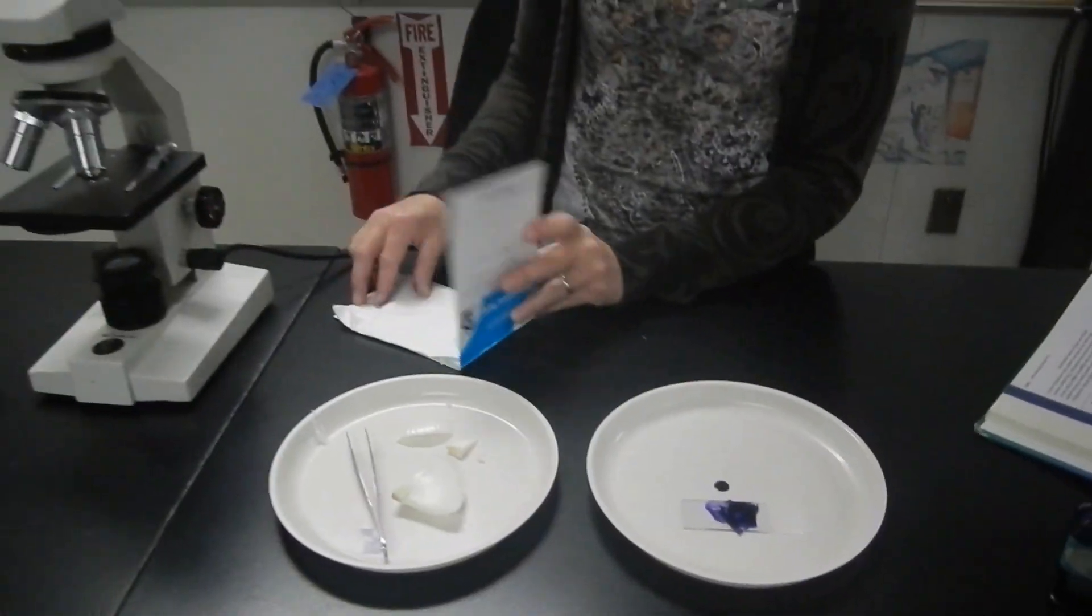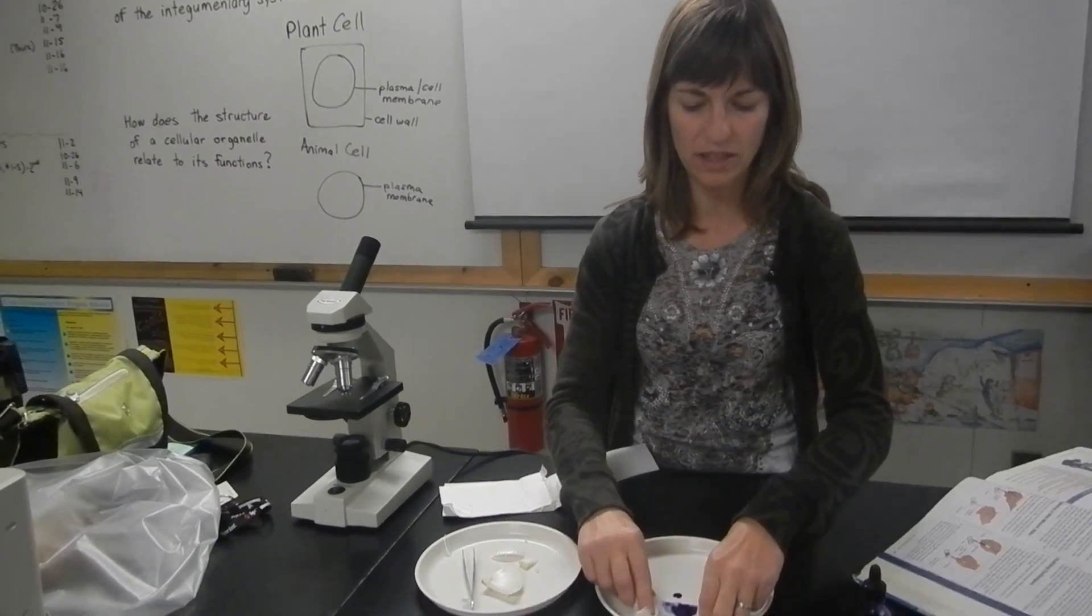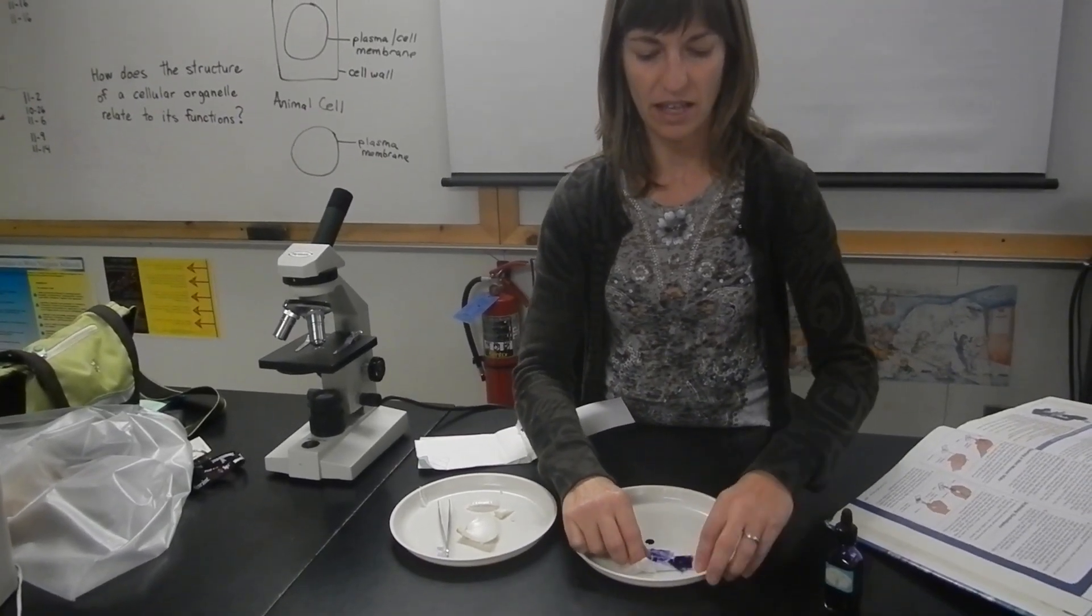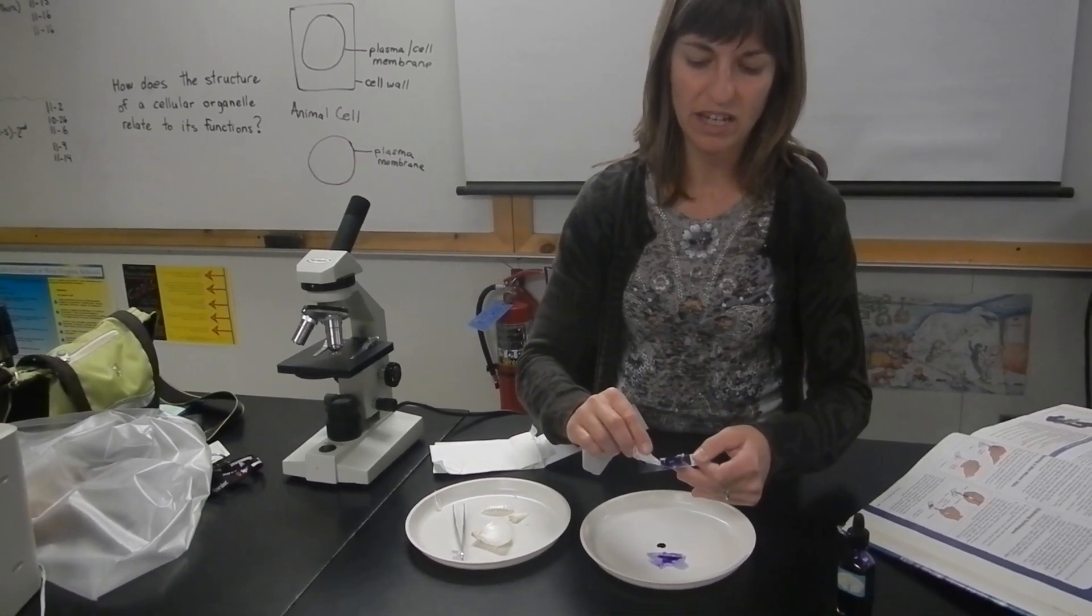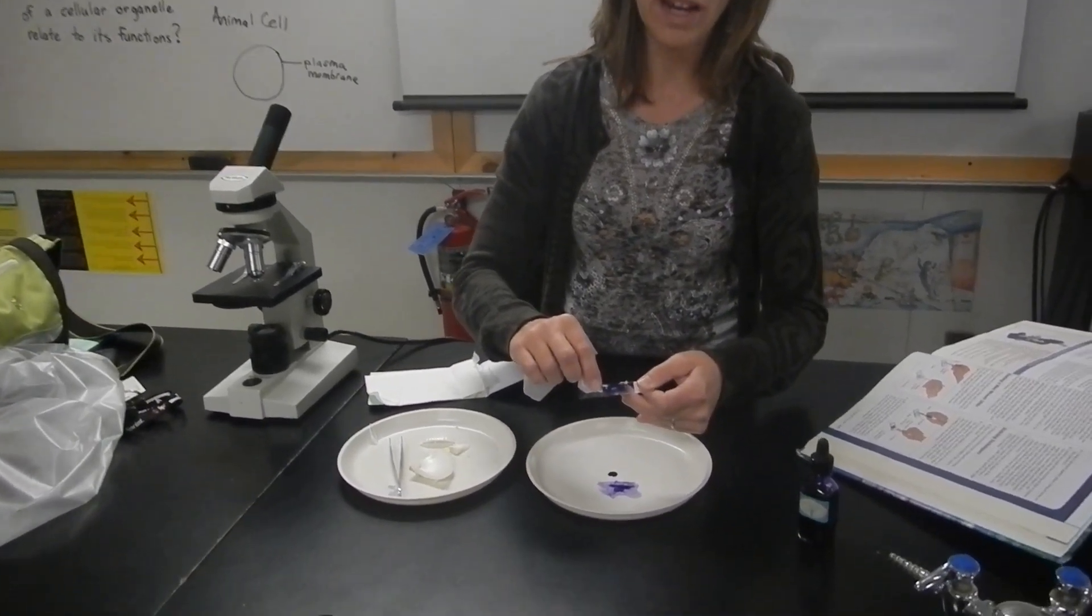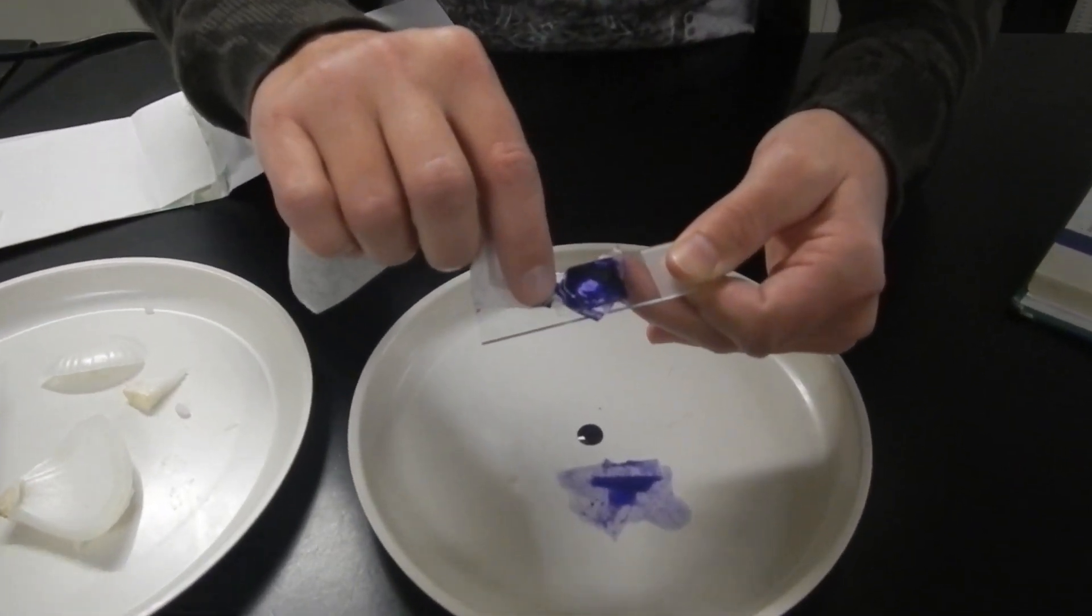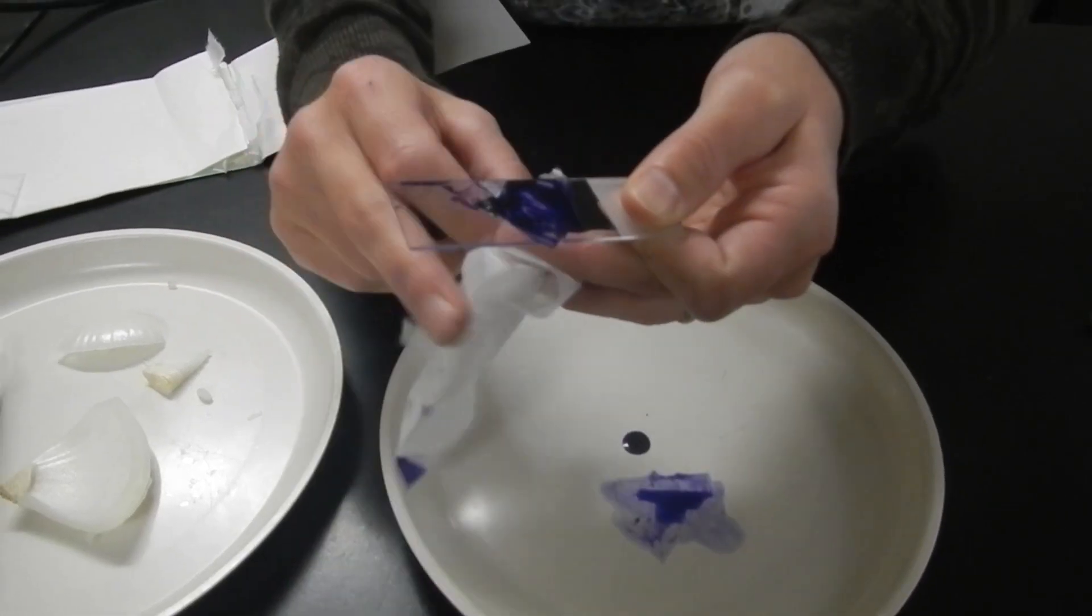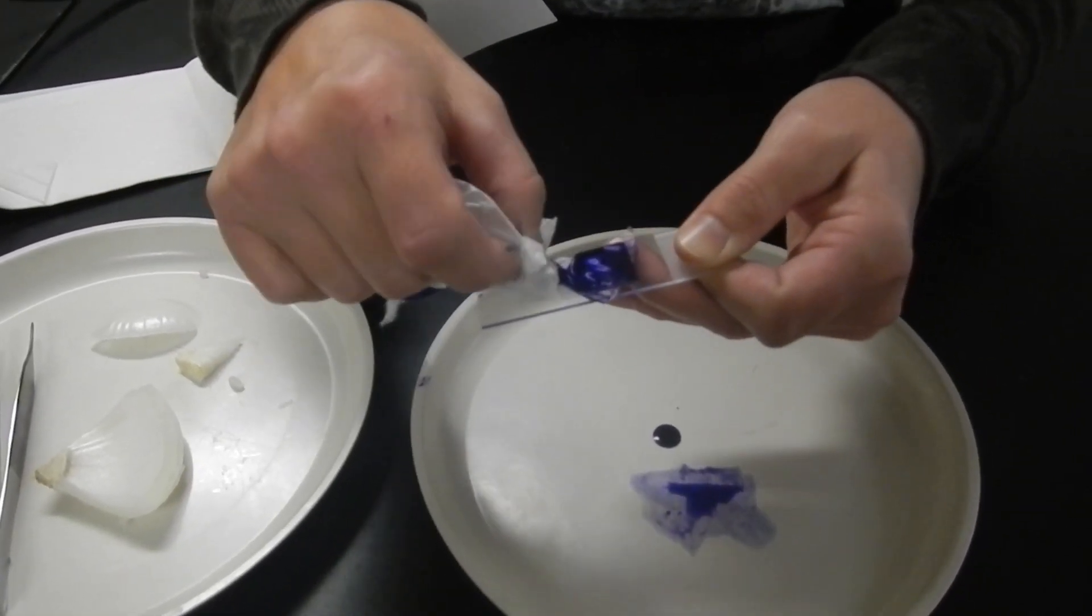Now my last step is I'm going to remove some of that excess stain that's on the onion cell slide. To do that, I'm going to take this tissue paper right on the edge of the cover slip right here and what that's going to do is it's going to draw the stain through the specimen and it's going to stain every one of those little cells that are on my slide.